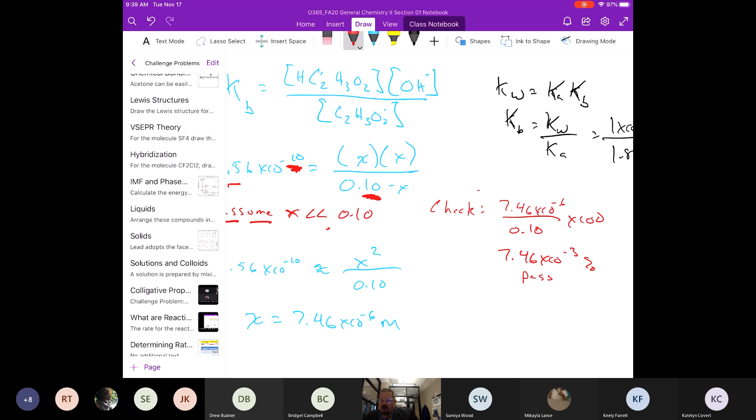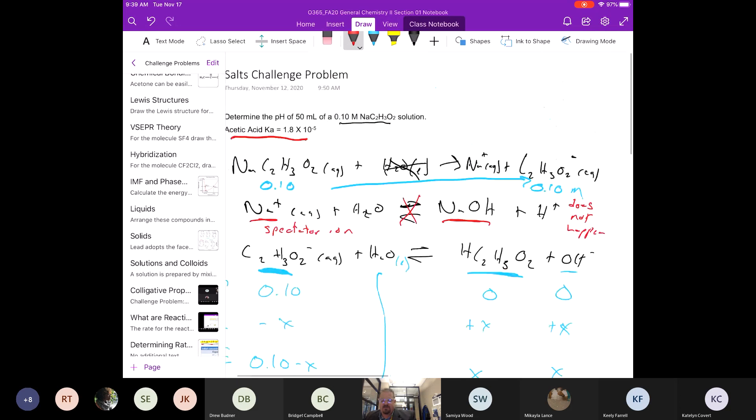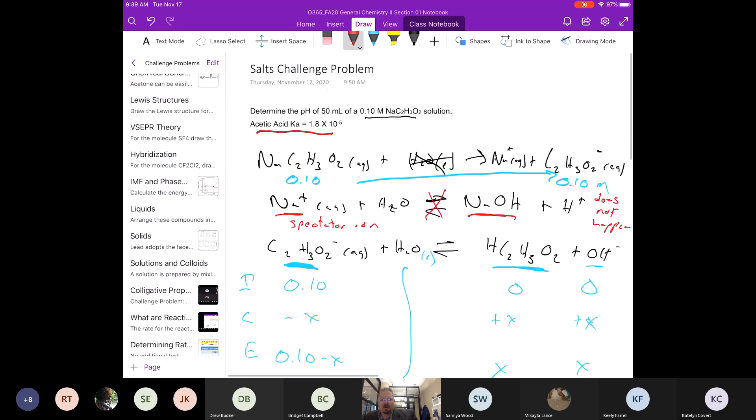So now we've done all this work. We found X. Again, this is the point where we've done a lot of work. We found X, but X may or may not be the answer we're looking for. So we have to go back to what we were interested in solving for. In this problem, we wanted the pH.